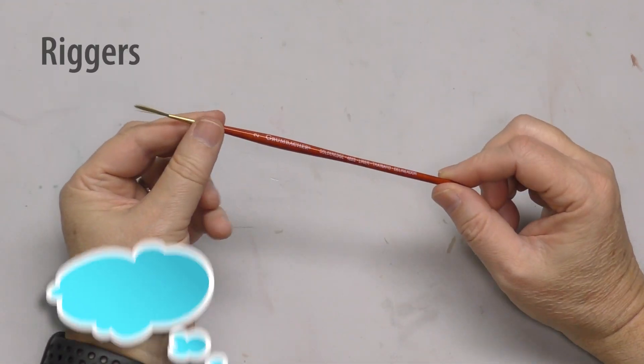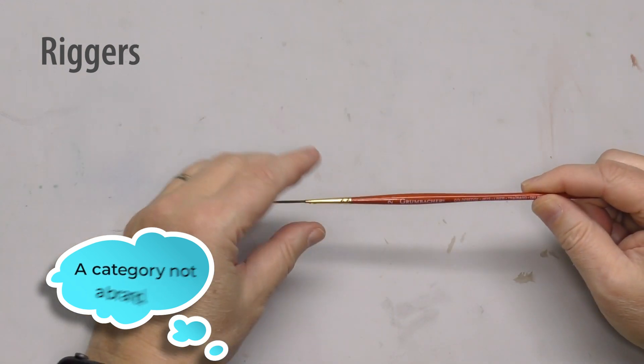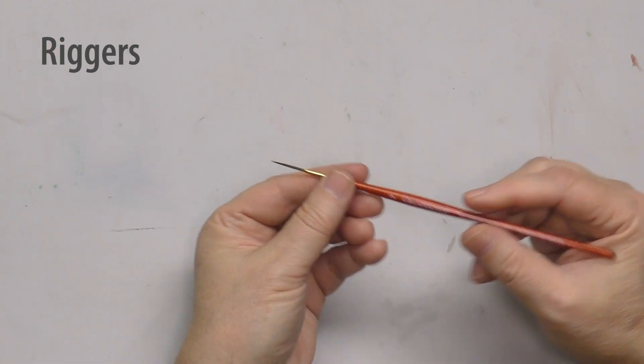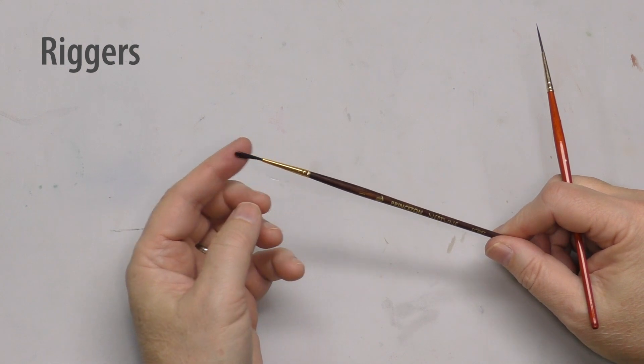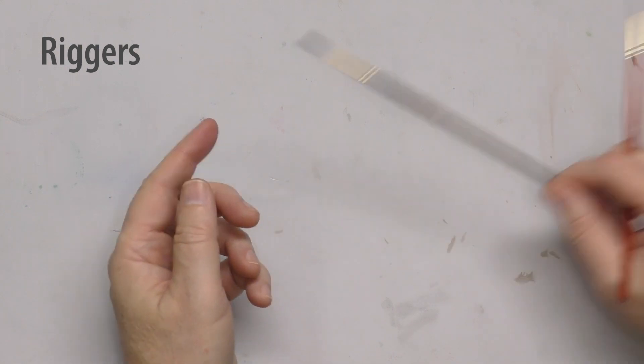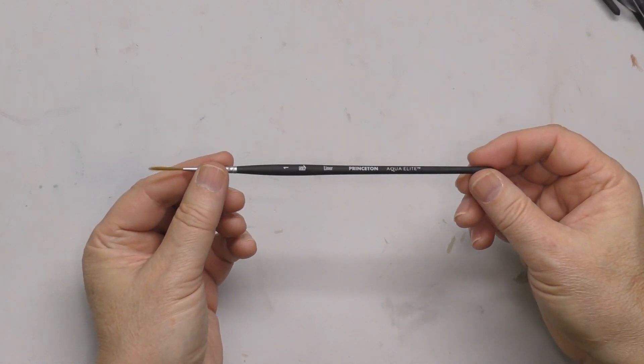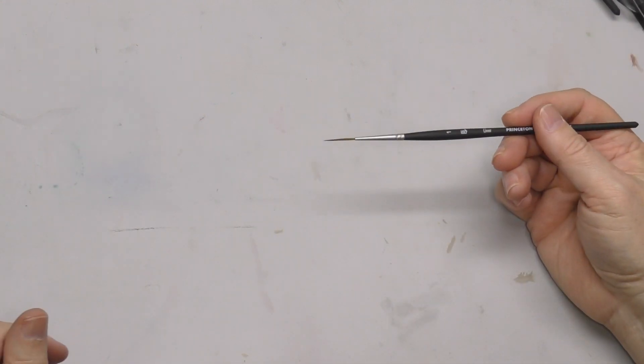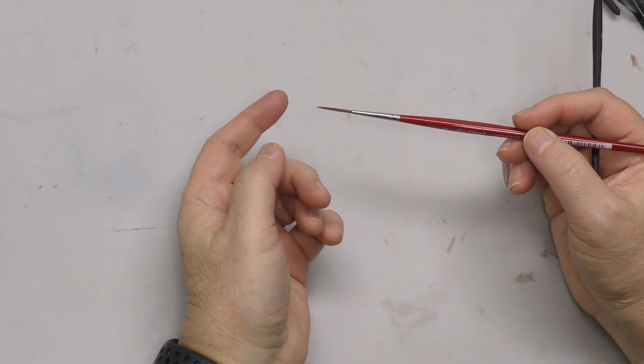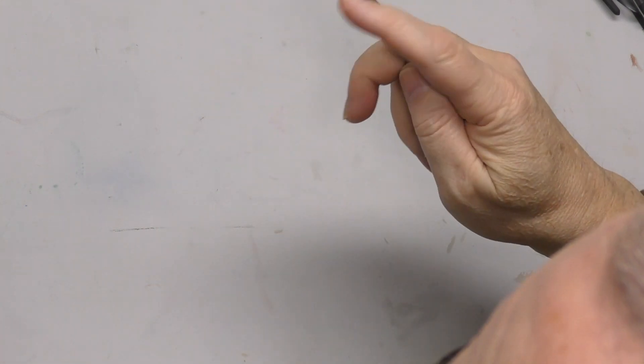Also in the detail category are riggers. One of my all-time favorites has been this Grumbacher Golden Edge. It's just a standard golden tacklin brush. But I like riggers with a lot of snap. And this one has a lot of snap. Princeton Neptune, that rigger is pretty nice. A little bit softer. Not as much snap. And of course, going back to one of the categories I showed already, the Princeton Aqua Elite, really good rigger. I tend to use a number one or a number two. Da Vinci Cosmotops Spin makes a great rigger. So there are several of these riggers that I like to use.